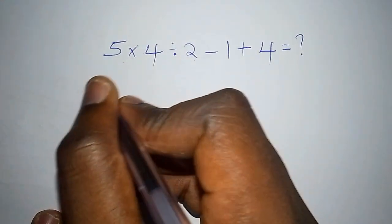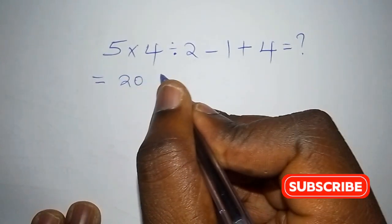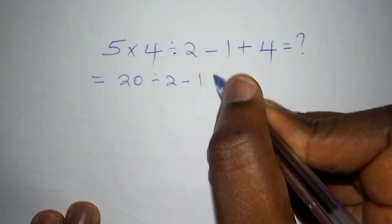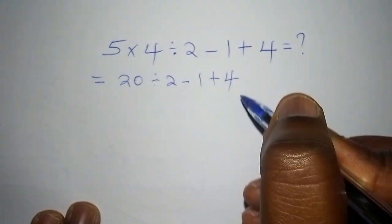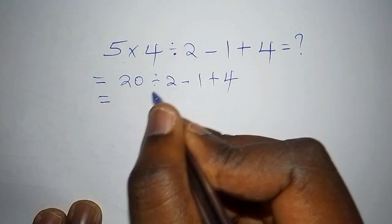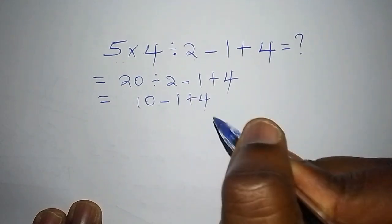Someone can make this mistake and say that this one is equal to 5 multiplied by 4 is 20, divide by 2, subtract from 1, add 2, add to 4. Then they go ahead and say 20 divided by 2 is 10, subtract from 1, add to 4.